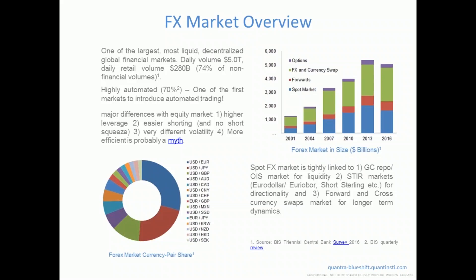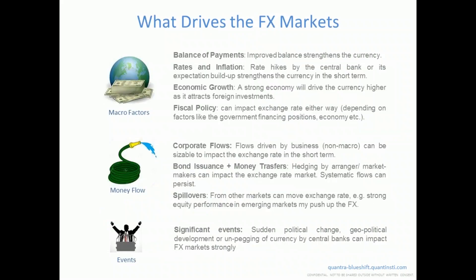The Forex market is tightly coupled with a few other markets. One is the short-term funding market — the GC repo market or the OIS market depending on whether it's dollar or euro. This drives liquidity: if funding rates go up, liquidity usually dries up, and it also determines your overnight rollover cost. The short-term interest rate market is a strong influencer of directionality, capturing the central bank reaction function. The forward markets and cross-currency swap markets also determine long-term dynamics, especially around consistent funding shortages.